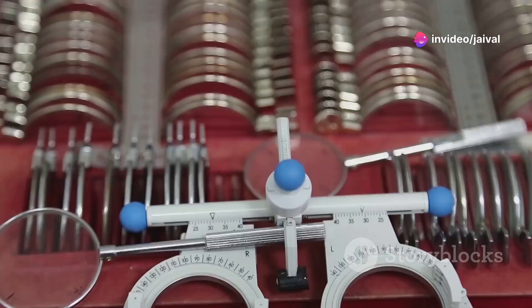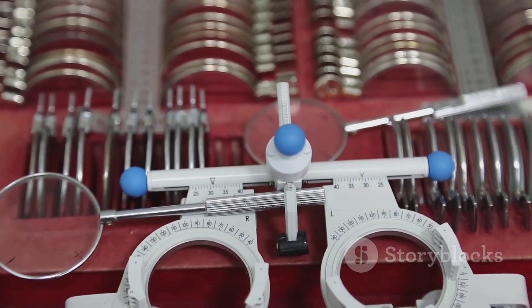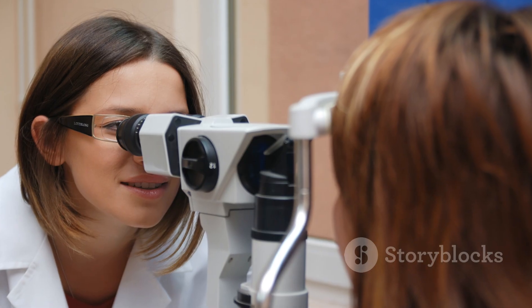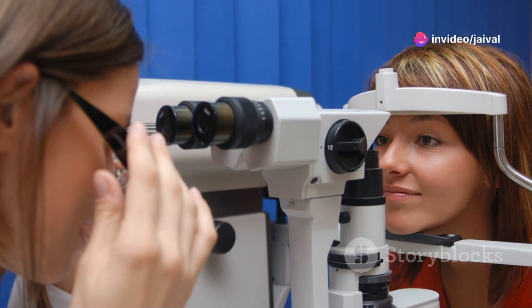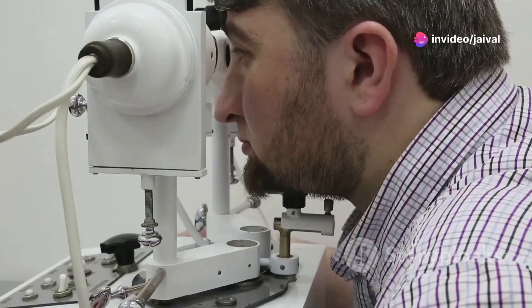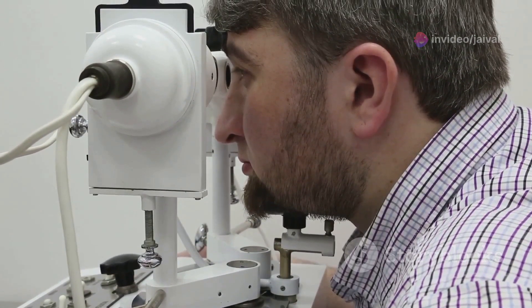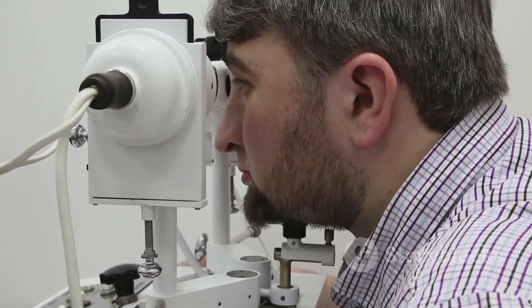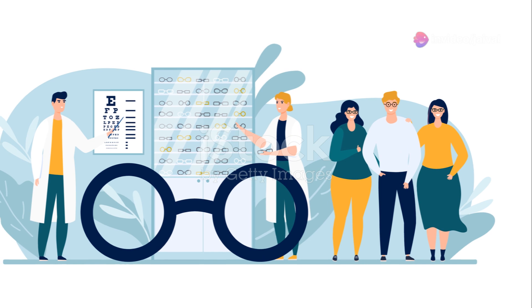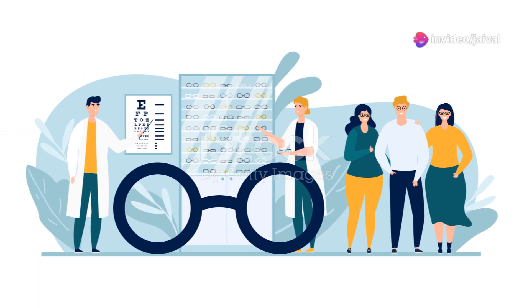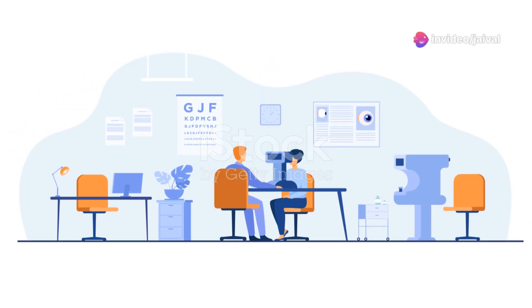The Kepa lens is often used for direct gonioscopy and provides a direct view of the angle structures. The choice of lens depends on the examiner's preference, the specific clinical situation, and the details required from the examination. Regardless of the type of goniolens used, it remains an indispensable tool for detailed examination of the eye's anterior chamber angle. This detailed examination is crucial for the accurate diagnosis and personalized management of glaucoma, a condition that can lead to vision loss if not properly managed.